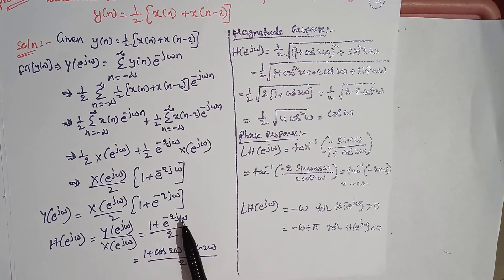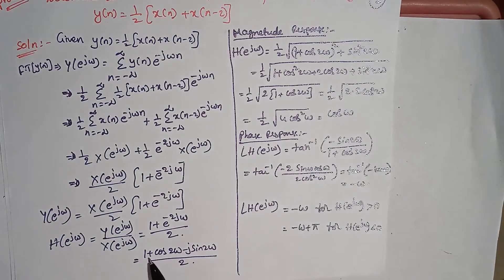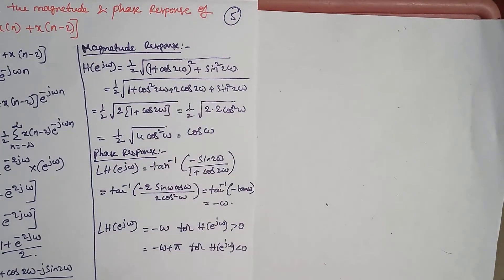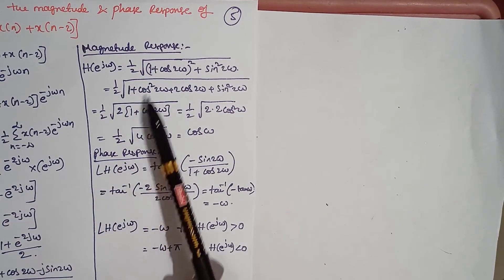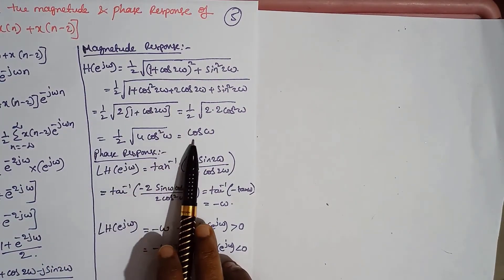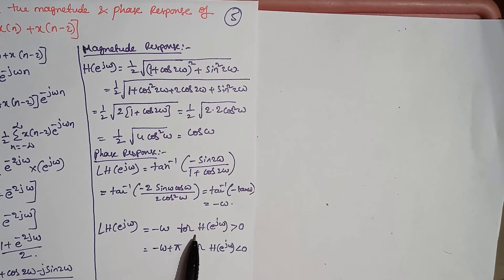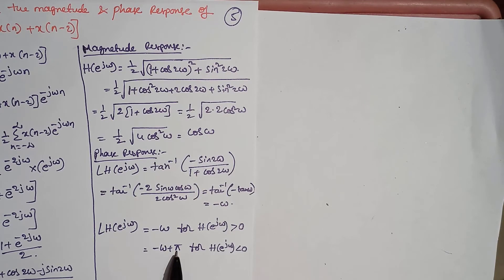Using e power minus theta equal to cos theta minus j sin theta, we get H of e power j omega equal to (1 plus cos 2 omega minus j sin 2 omega) divided by 2. From this, the magnitude response simplifies to cos omega, and the phase response is minus omega for the case when the impulse response is greater than 0, and minus omega plus pi when the impulse response is less than 0.